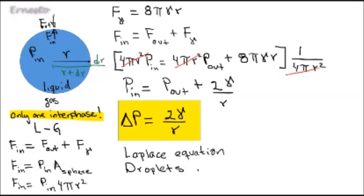Remember, this mathematical deduction applies to droplets, which are bulk of liquid surrounded by gas or vapor. And in this case, there is only one interface.